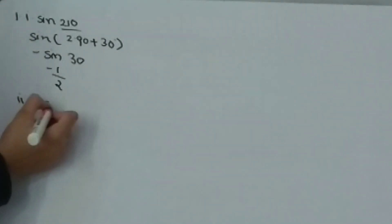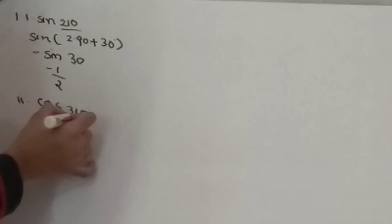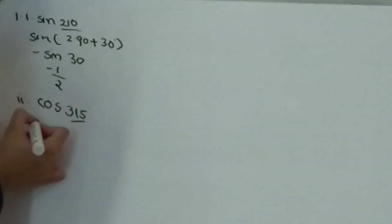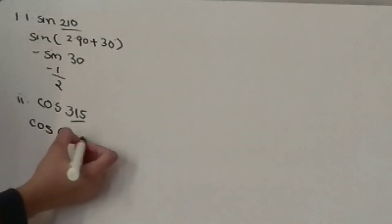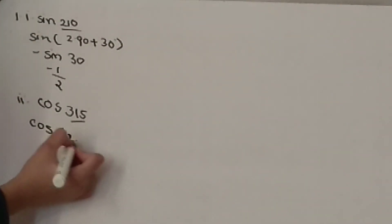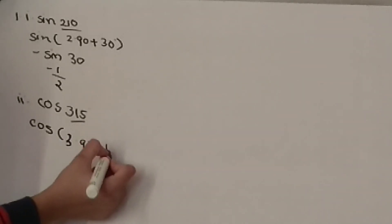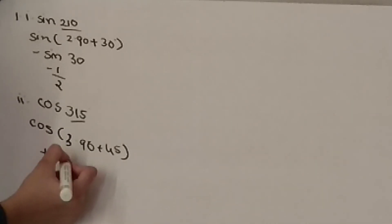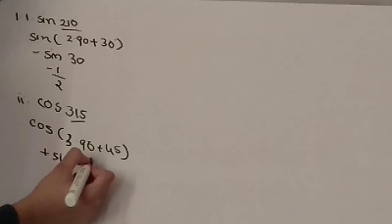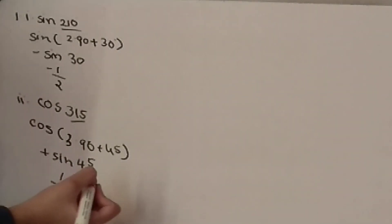Second one: cos(315°). We should split 315 as well. So cos(3×90° + 45°), then it will become plus sin(45°). Sin(45°) is 1/√2.